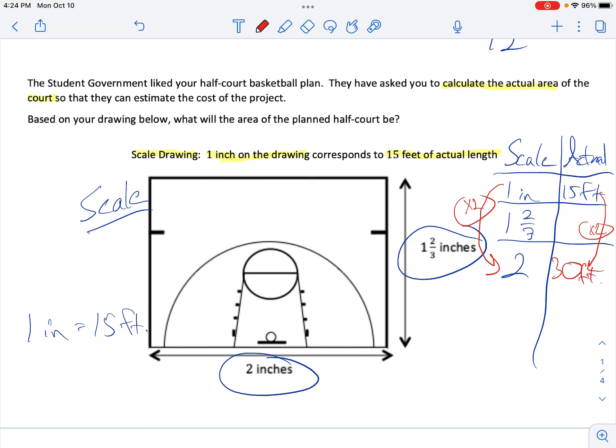Then we have 1 and 2 thirds. I'm going to make that 1 and 2 thirds equals 5 thirds. And we're going to multiply that by 15 because we have to go by 15. We could have done 2 times 15 to get 30. Times 15. 5 thirds times 15 over 1. We can cross simplify. 5 times 5 is 25. So, we have the dimensions are 25 feet by 30 feet.